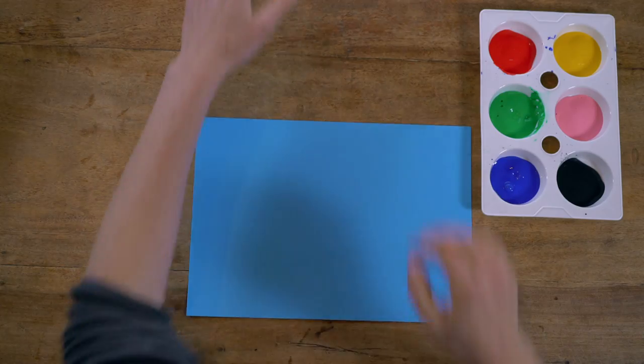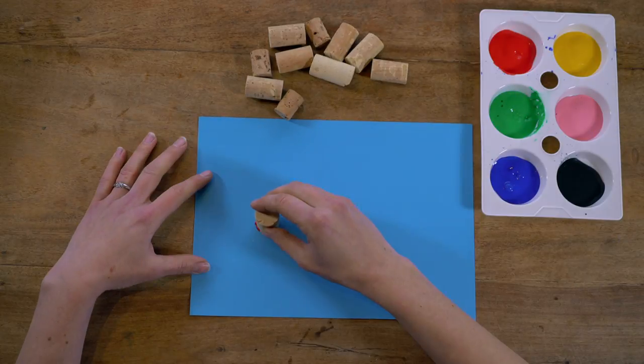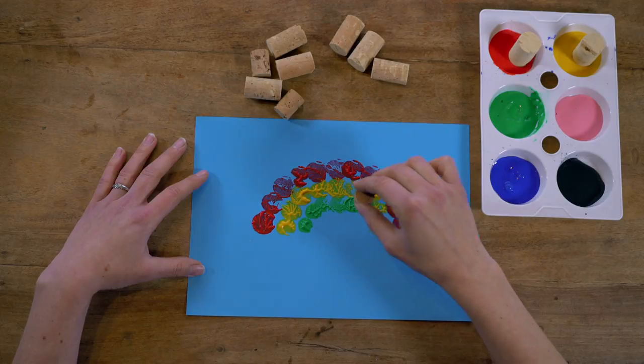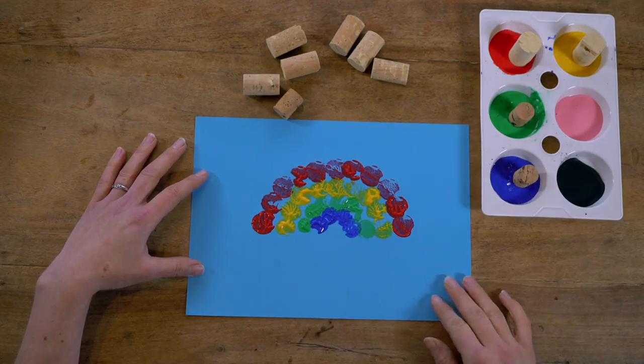Another idea with corks is to use them to make stamps. Gather a whole selection, it doesn't matter what size they are, and use different colored paints to create a picture. We're making a rainbow. Just make sure you leave it to dry.